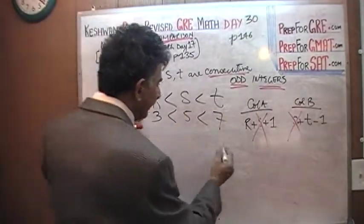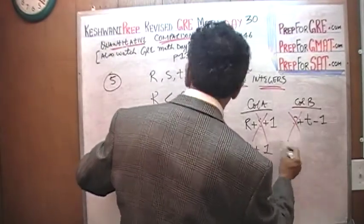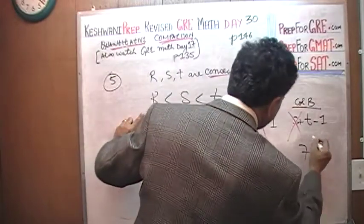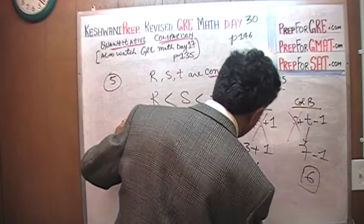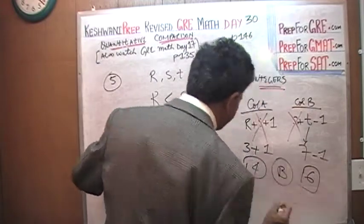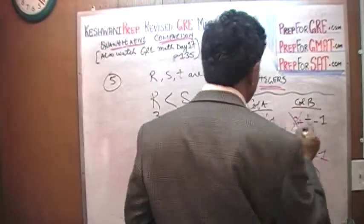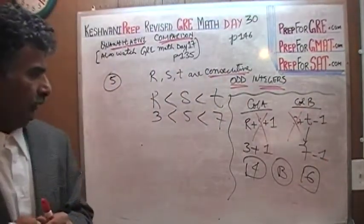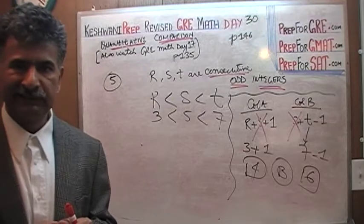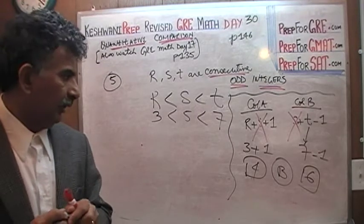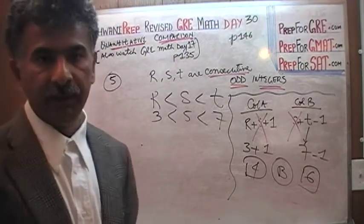So, R is 3 plus 1 which is 4 and T is 7. T is 7 minus 1 which is 6. 6 versus 4. Oh no, the answer is B. That's it. We are done. The answer is B. No matter how many times you plug in, no matter how many different numbers you plug in, as long as they are consecutive odd integers, you will see that the column B will always be 2 more than the column A.